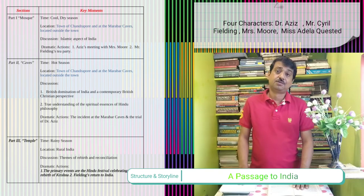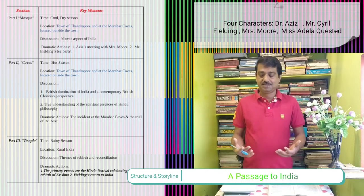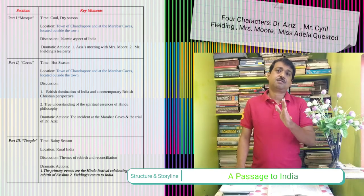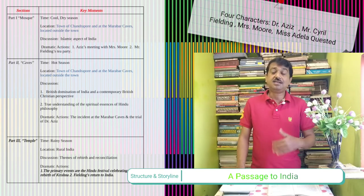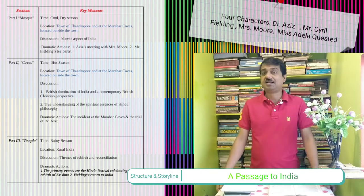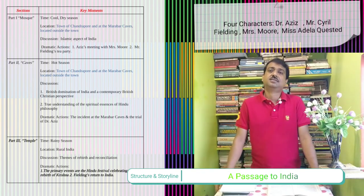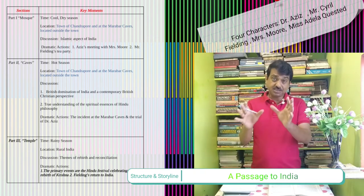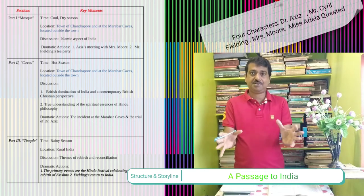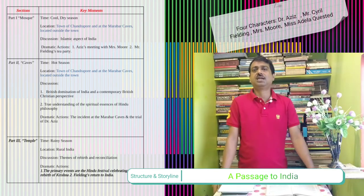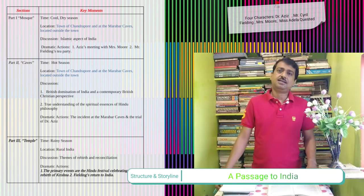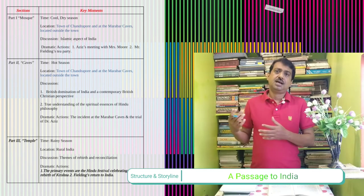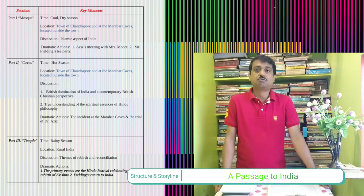The third section, 'Temple,' talks about the recycle of life. It happens in the rainy season and concentrates on themes of reconciliation in different forms. The primary event depicted is the Hindu festival celebrating the birth or rebirth of Krishna, and Fielding's return to India. The action of the first two sections takes place in the town of Chandrapur and at the Marabar Caves, modeled after the Barabar Caves in Bihar. The third section moves toward rural India.